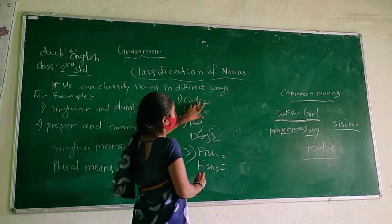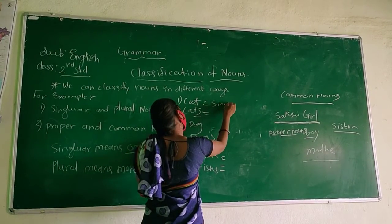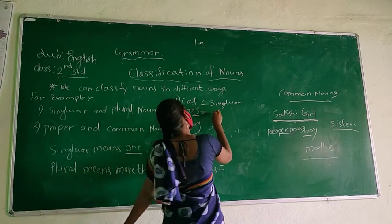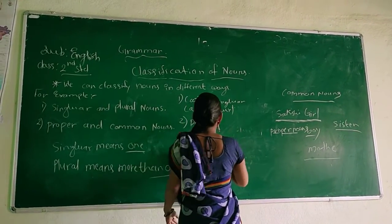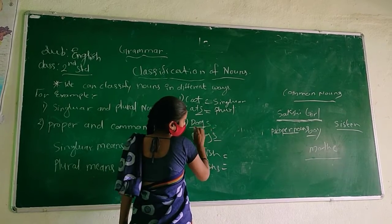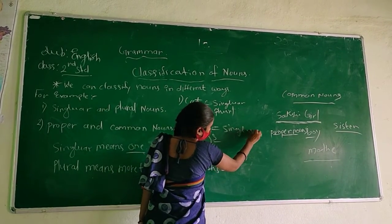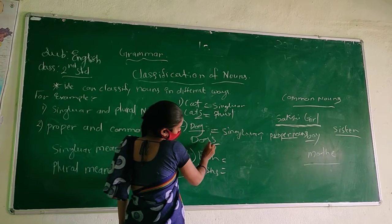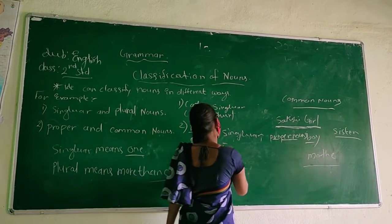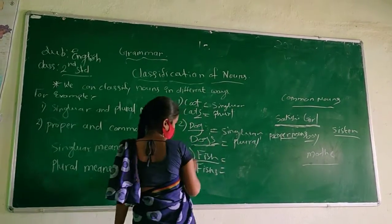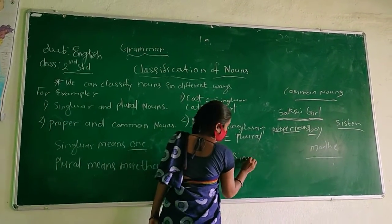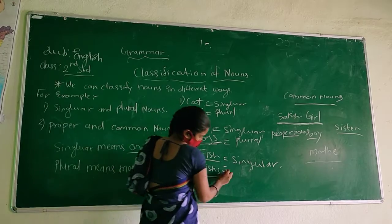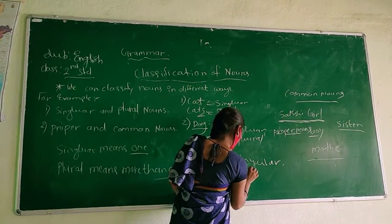C-A-T, cat — there is no 's', that's why it is singular. C-A-T, cat is singular. Same: D-O-G — there is no 's', so it is singular. D-O-G-S, dogs — there is an 's', so dogs is plural. Fish — there is no 's'. Fish is singular and this is the plural form.